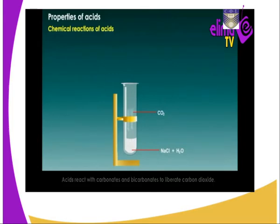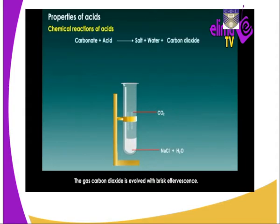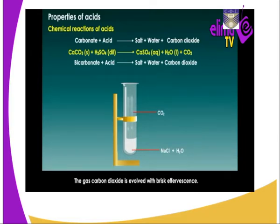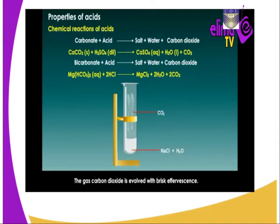Acids react with carbonates to give us salt, carbon dioxide, and water. They liberate gas in a process we refer to as effervescence. For example, calcium carbonate reacts with sulfuric acid to give us calcium sulfate plus water and carbon dioxide gas. A bicarbonate also gives us salt, water, and carbon dioxide. For instance, magnesium hydrogen carbonate plus hydrochloric acid gives us magnesium chloride plus water and carbon dioxide.